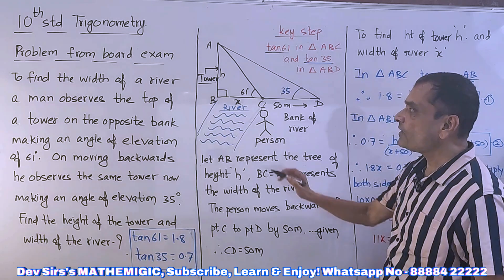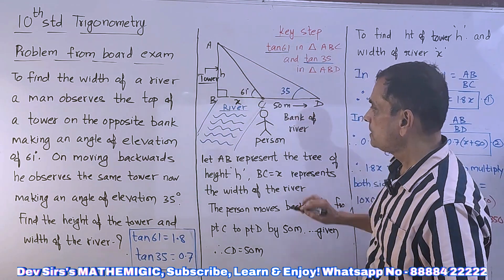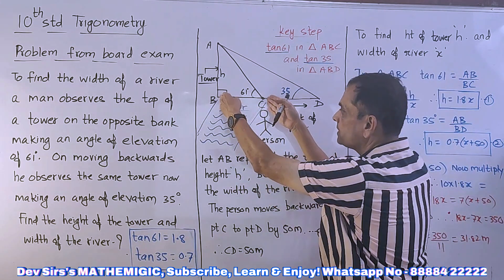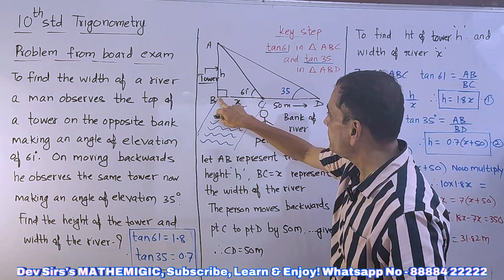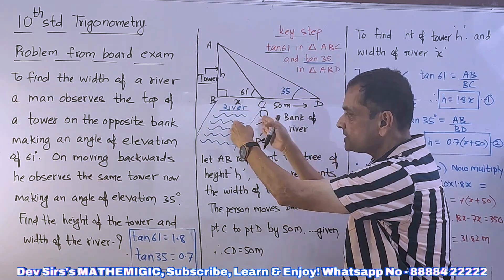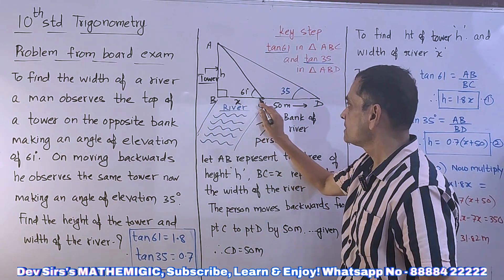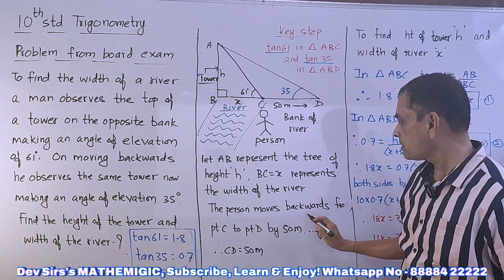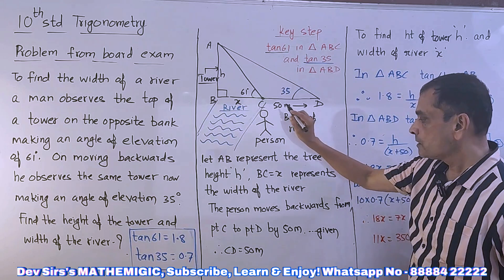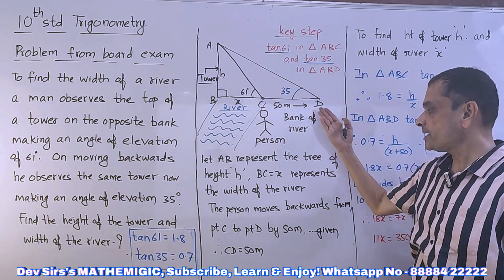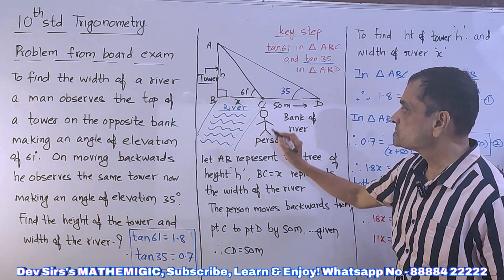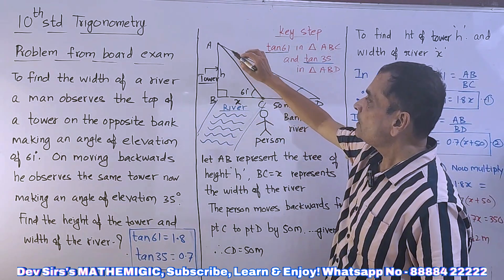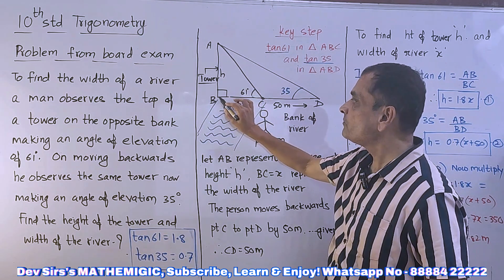Let AB represent the tower of height h. BC represents the width of the river — we call it x. The width of the river is x. Then the person moves backwards from point C to point D by 50 meters, so CD is 50 meters. Based on this, we have to find the height of the tower and the width of the river.